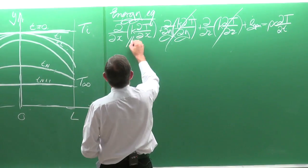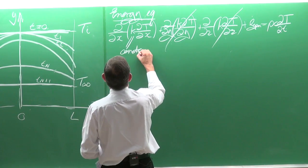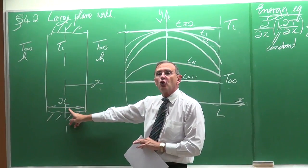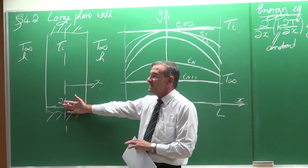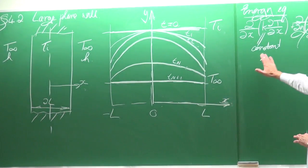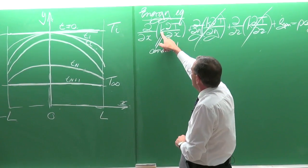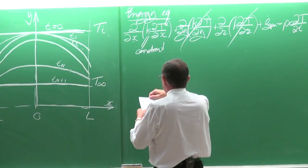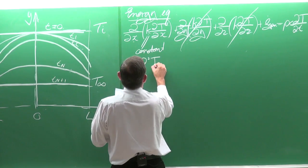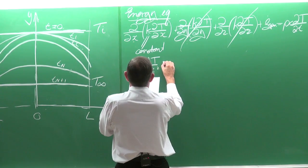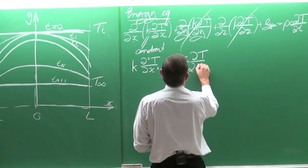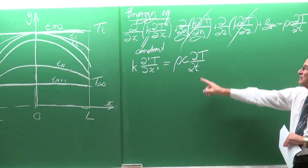We assume the thermal conductivity of the material is constant. That's not always valid — for composite materials, for example — but in general it's a good assumption. With constant thermal conductivity, we can simplify the energy equation to: K times (∂²T/∂x²) = ρC times (∂T/∂t). There is also no heat generation term since there are no nuclear reactions or chemical reactions in the wall.